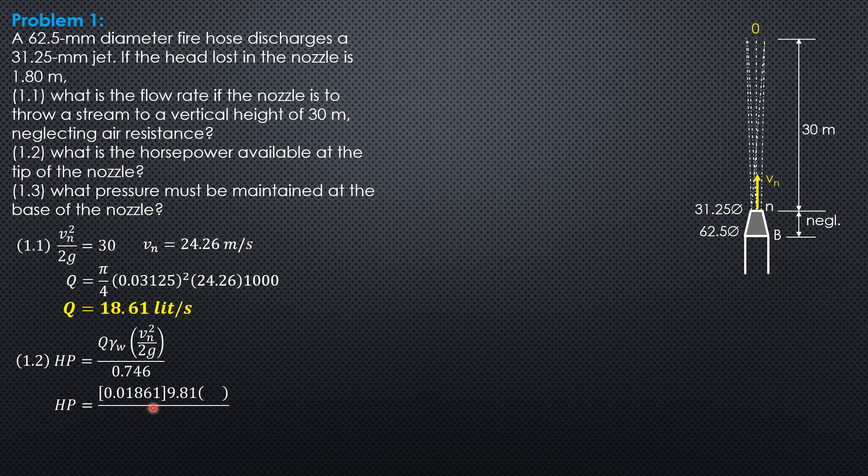We divide by 0.746 because we plan to express gamma of water equal to 9.81 kilonewtons per cubic meter. 0.01861 cubic meter per second times 9.81 kilonewtons per cubic meter times 30 velocity head at the nozzle tip, over 0.746. The horsepower available at the nozzle tip is 7.342 horsepower.